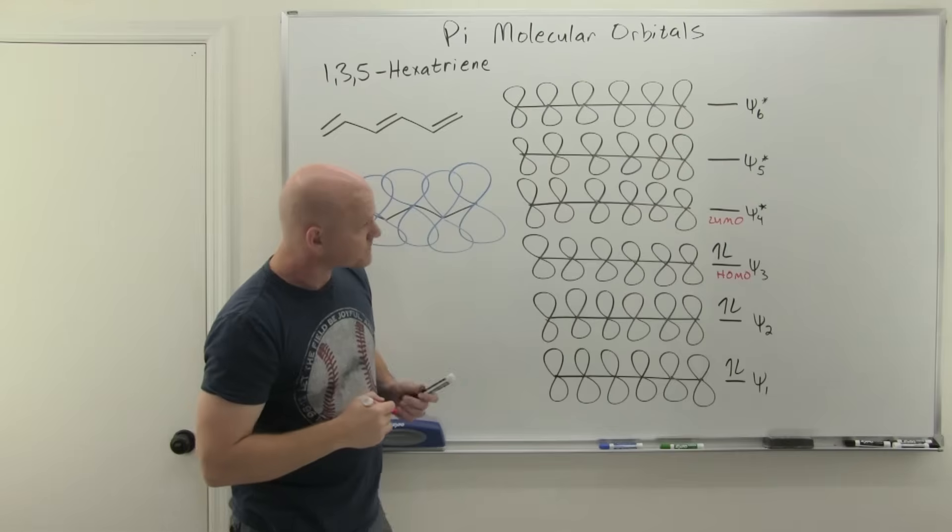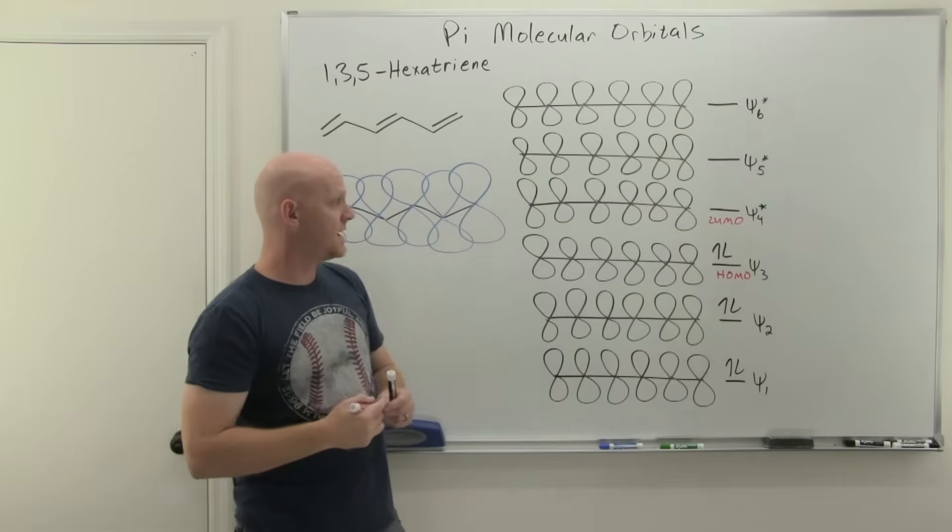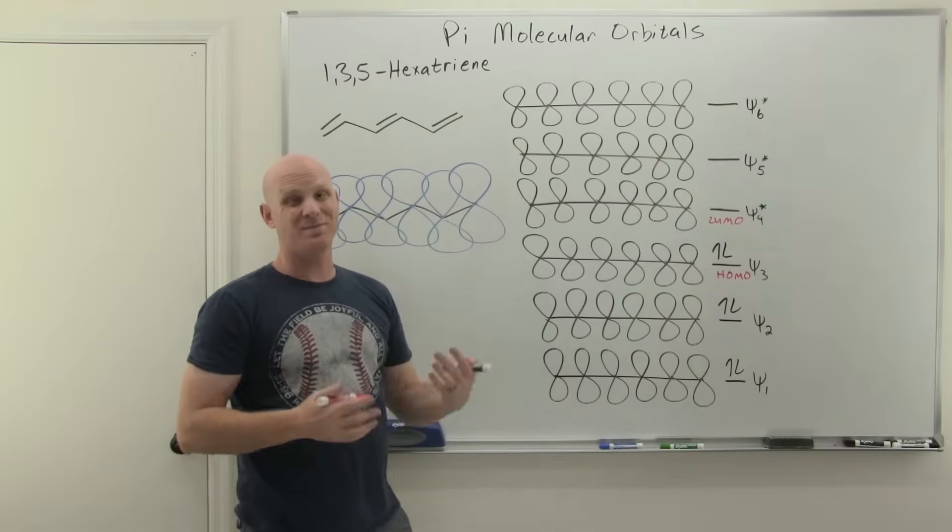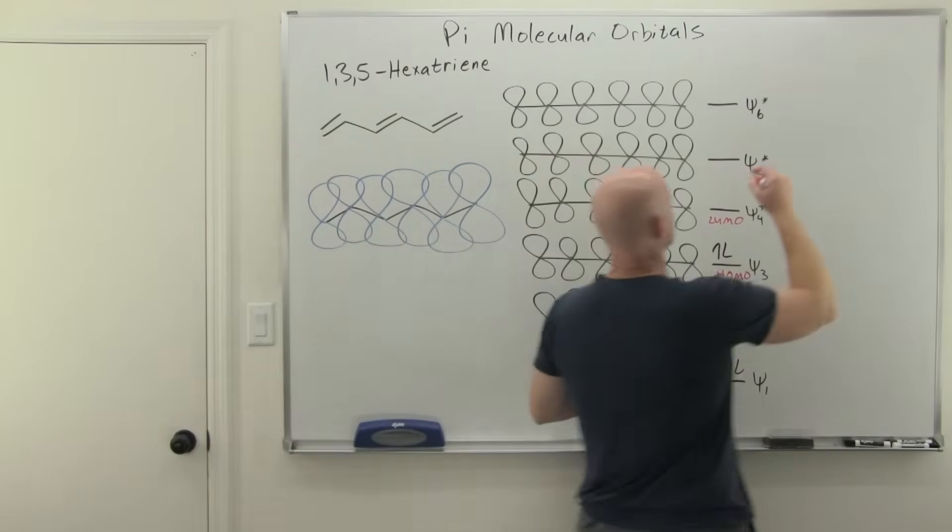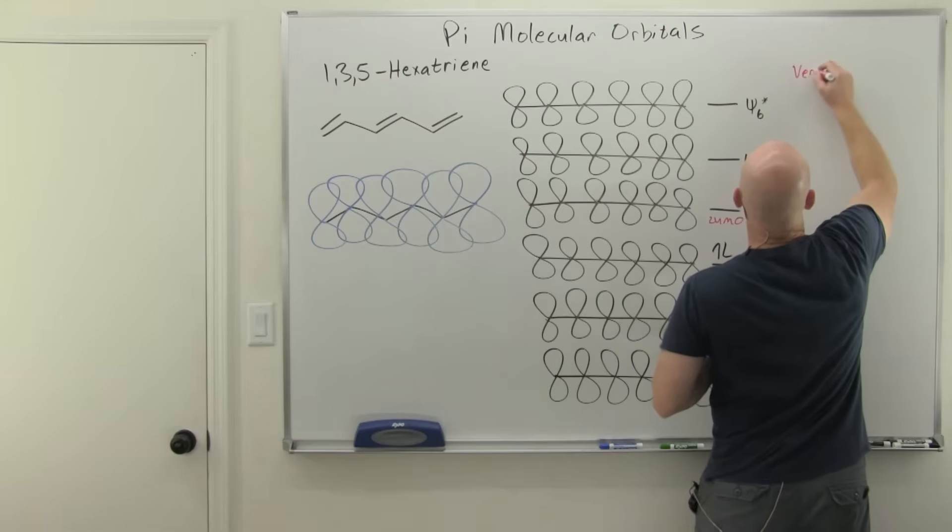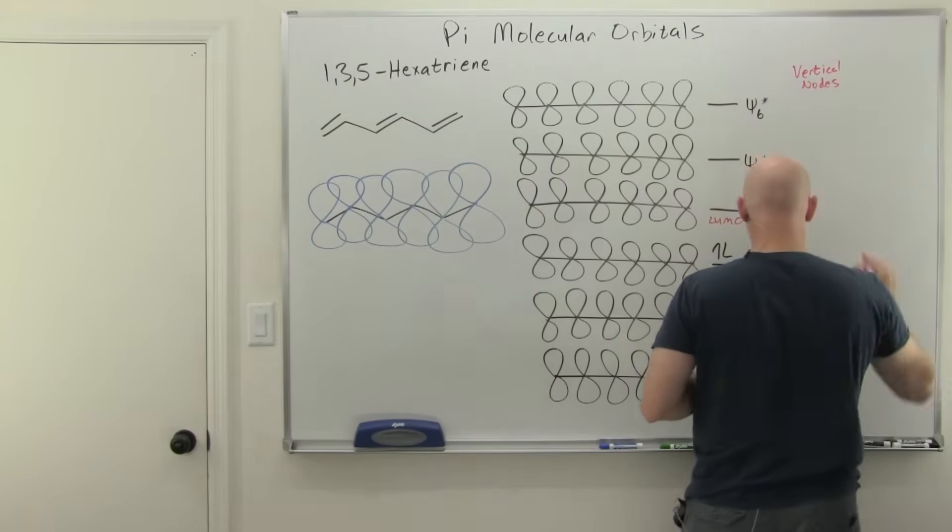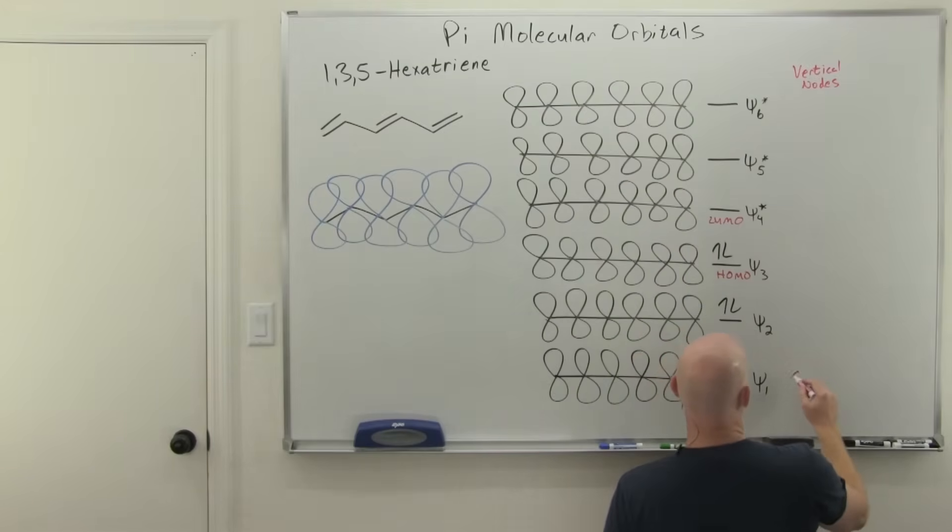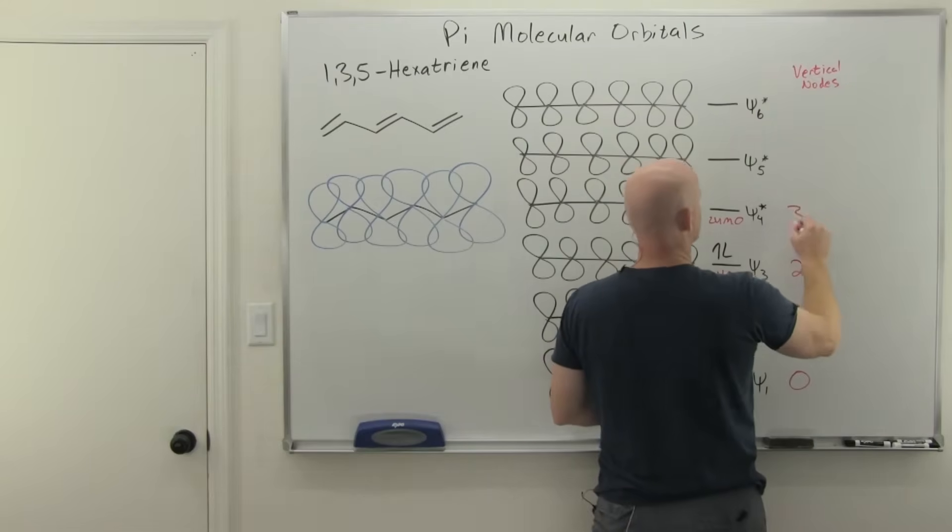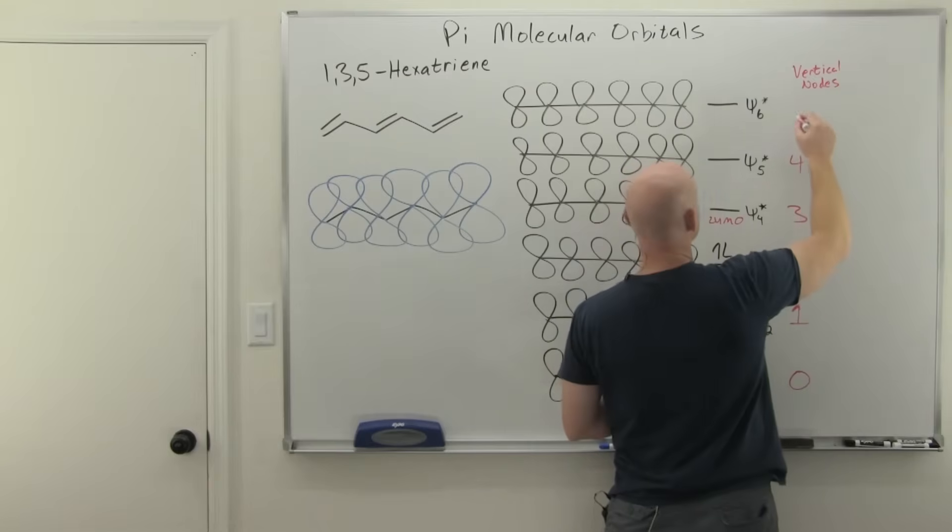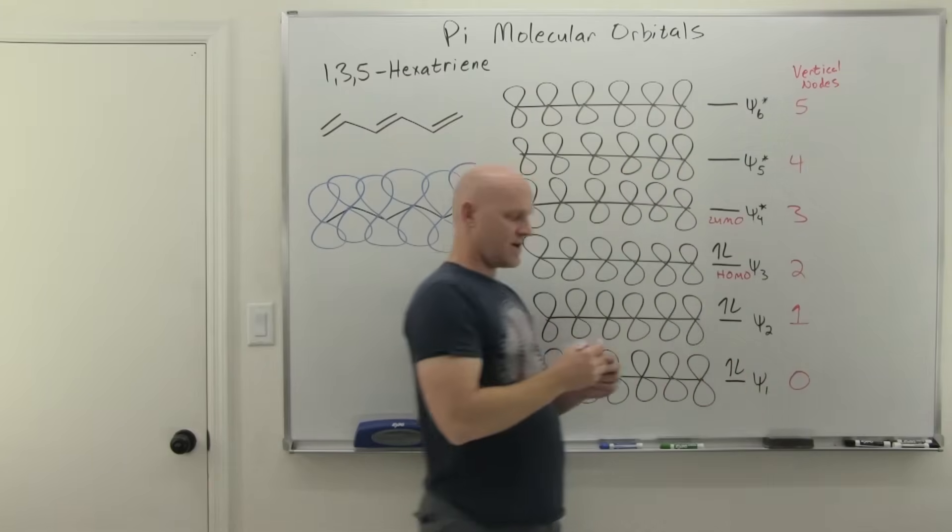A couple other things we can see before we actually draw this. The useful drawing tool here is going to be identifying the number of nodes each of these has before we actually go. Specifically the number of vertical nodes. As we've mentioned in the previous videos, your lowest energy molecular orbital always has zero. And every time you go up in energy, you're going to get a new vertical node. So 1 for psi 2, 2 for psi 3, 3 for psi 4 star, 4 for psi 5 star, and 5 for psi 6 star.